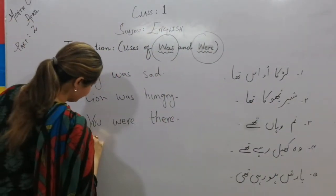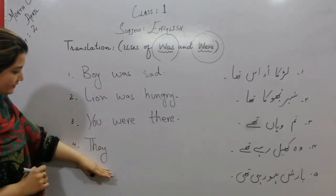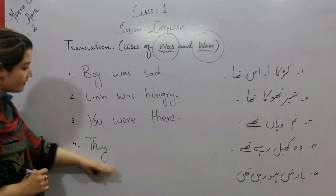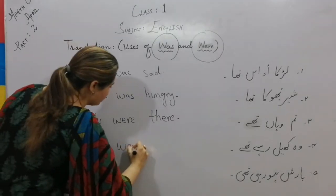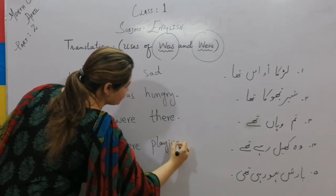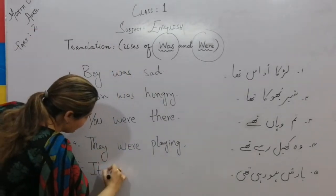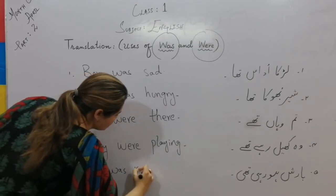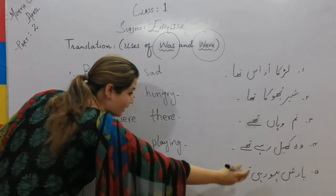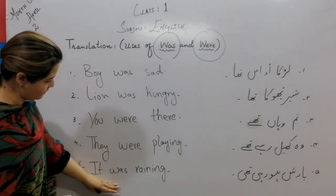'Woh khel rahi thi' — 'They were playing.' With 'they', we use 'were'. Next, 'Baarish ho rahi thi' — 'It was raining.' Here, 'baarish' (rain) is also a singular thing, so we use 'was'.